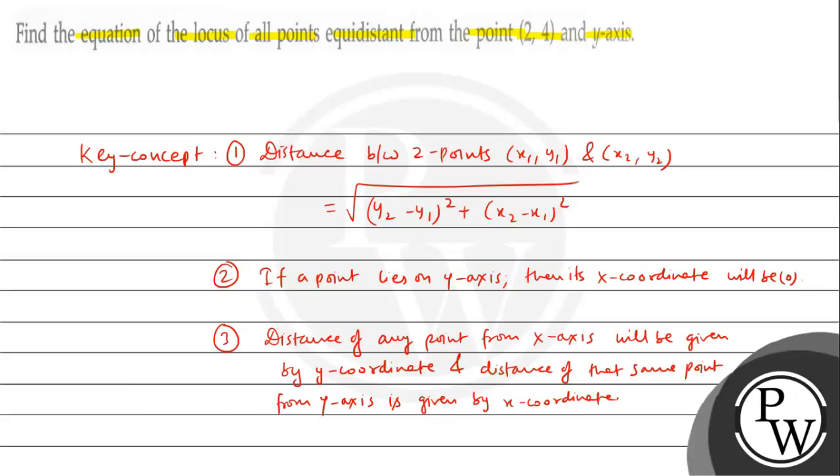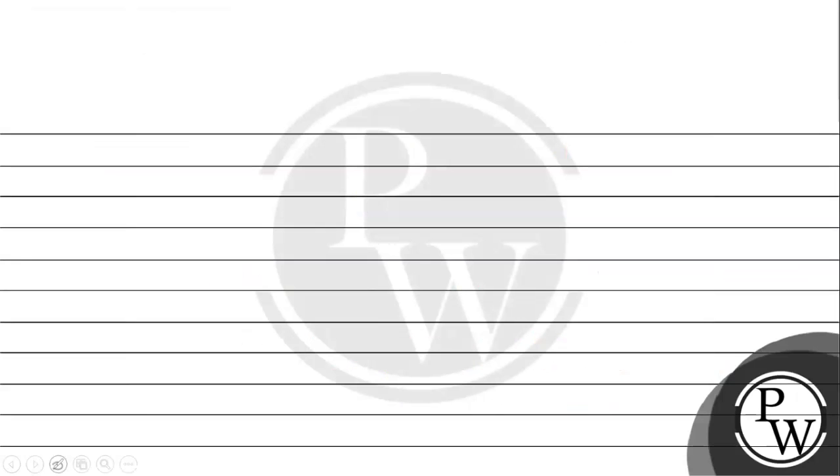Kahne ka matlab yeh hai ki agar kisi point ka x-coordinate x hai aur y-coordinate y hai, to x-coordinate x hone ka matlab hai ki us point ka y-axis se distance hai wo x hai. Aur y-coordinate y hone ka matlab hai ki us point ka x-axis se jo distance hai wo y hai. So, we will keep these three concepts in mind and solve these questions.